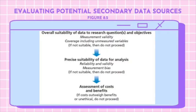Therefore, you must be able to evaluate the potential secondary data sources in order for them to be suitable for your research. First, look at the overall suitability of the data with your research questions and objectives. If it's not suitable, then don't proceed. If it's suitable, then look at the suitability in terms of data analysis. If it's suitable with your research, reliable and valid, then assess in terms of the costs and benefits. If the benefits outweigh the costs, then it is good for you to use the secondary data for your research.